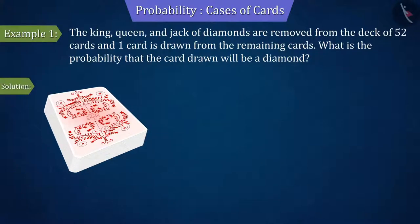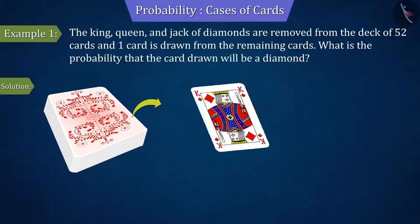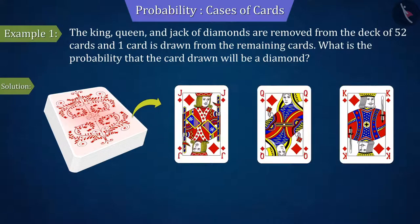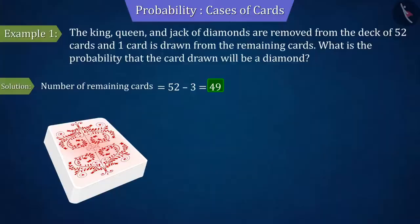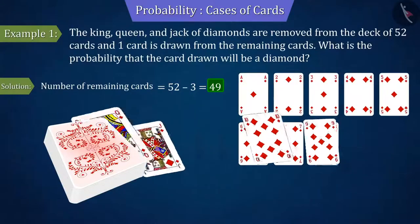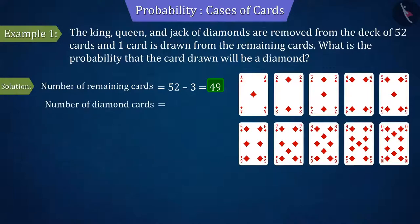From the given information, if the three cards of king, queen and jack of diamonds are removed, then the number of cards left in the deck is 49. Since we have to find the probability of getting a card of diamonds, we know that by removing three diamond cards, the number of remaining diamond cards in the deck is 10.